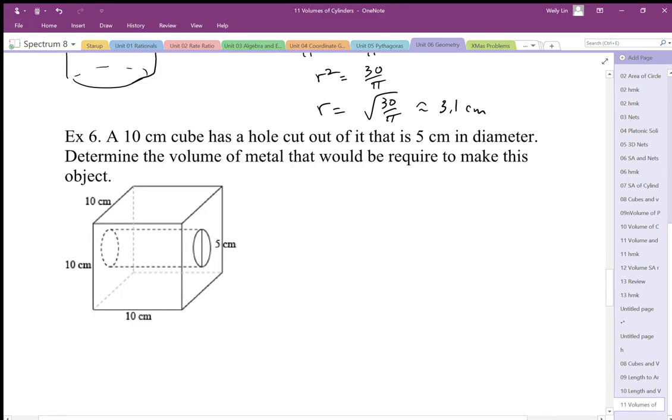We have a 10 by 10 by 10 cube, and we have a 5 centimeter diameter hole cut through it. So what volume of metal would be required to make this object?